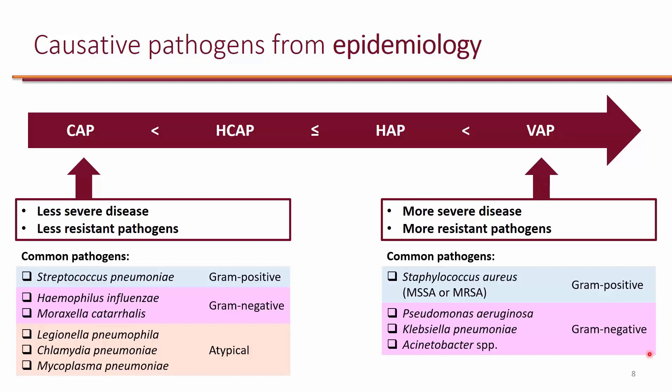The organisms that you want to target empirically are Staphylococcus aureus — which could include methicillin-susceptible Staphylococcus aureus or methicillin-resistant Staphylococcus aureus — as well as gram-negatives such as Pseudomonas aeruginosa, Klebsiella pneumoniae, and Acinetobacter species. These organisms are usually more likely to be drug-resistant.